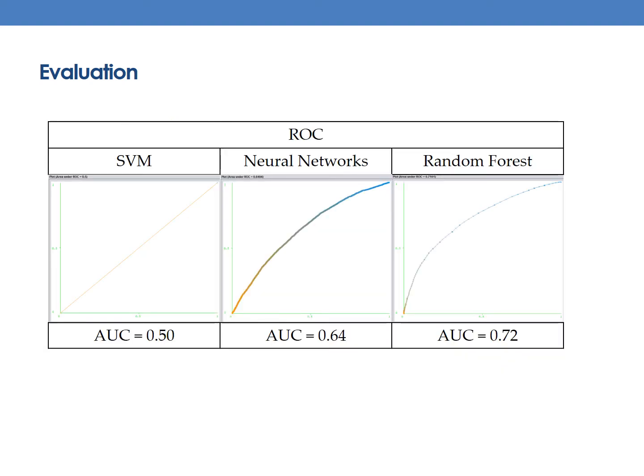As we can see from the table, the SVM is somewhat a random classifier, and the neural networks only does a little bit better. This time, random forest stands out and has the best performance out of 3.